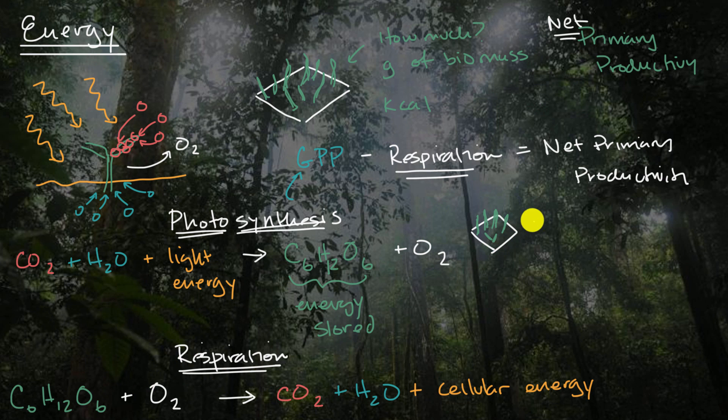So here we would say that the net primary productivity of this rainforest that you see in the background here would be approximately 2,000 grams per square meter per year.